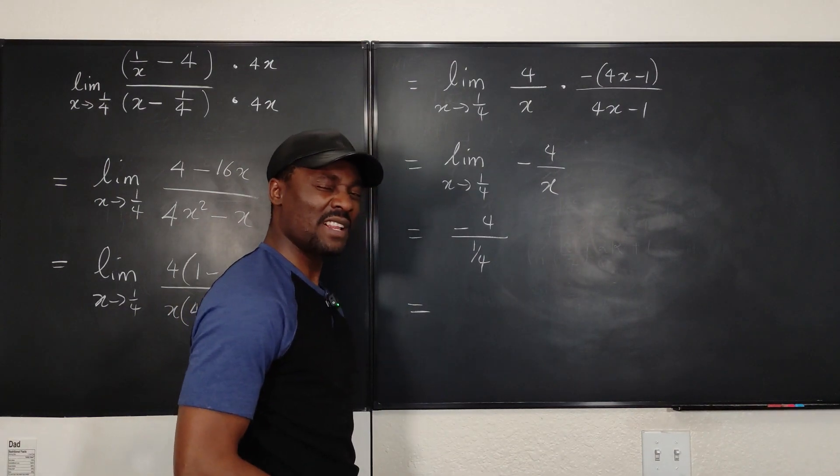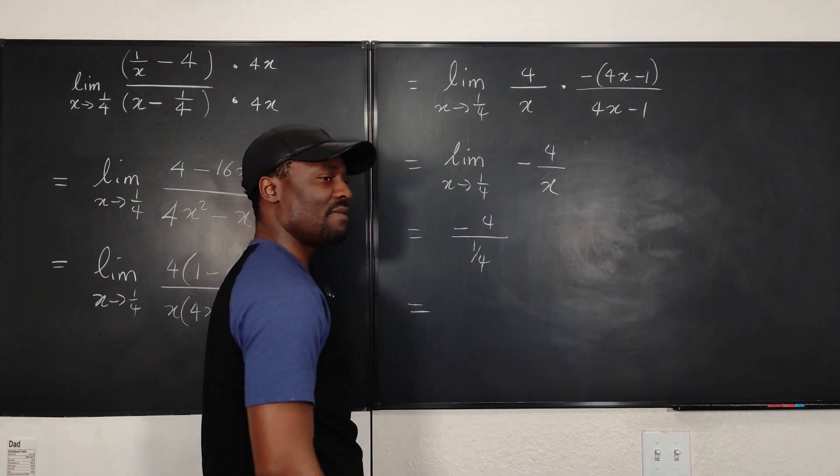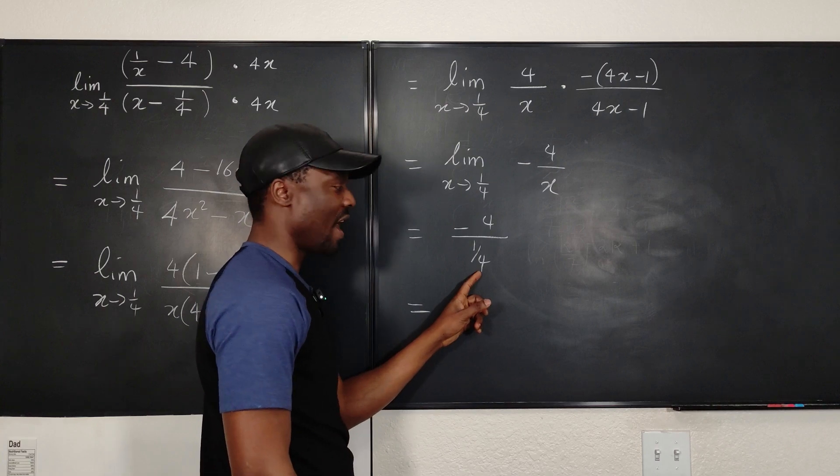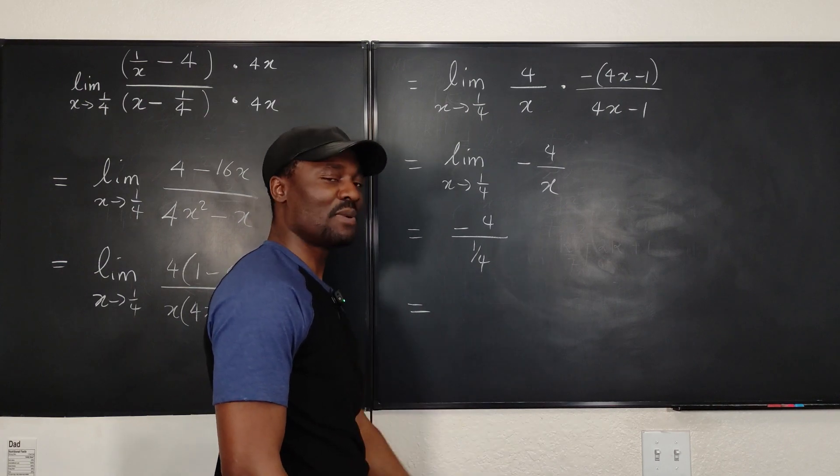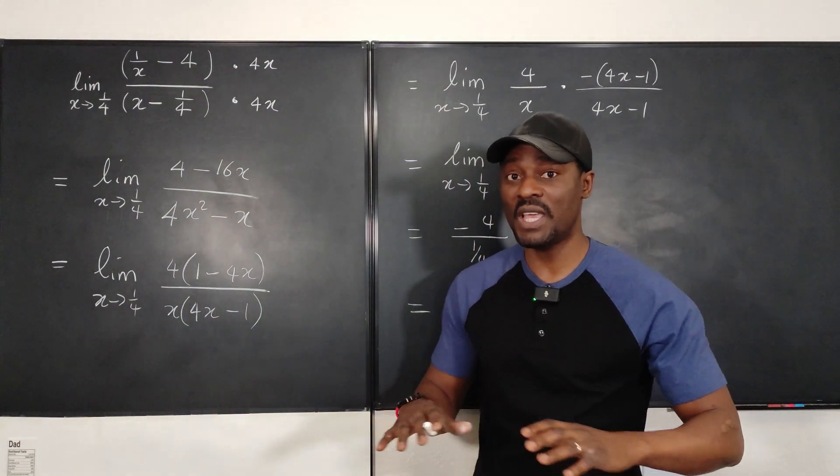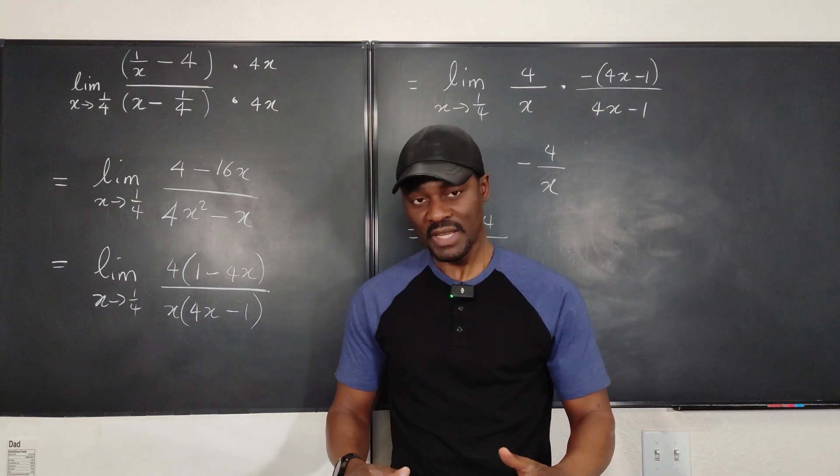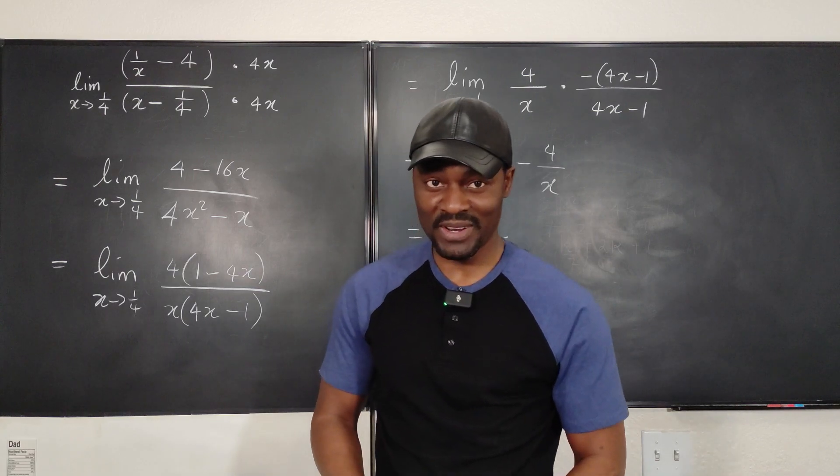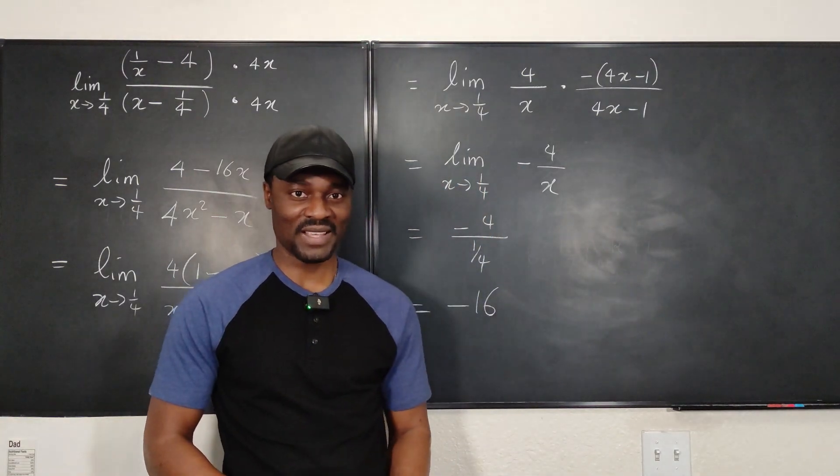And this is going to be negative 16. How do I know it's negative 16? Multiply the top and bottom by 4. Since that's the only denominator you have, multiply by 4, you get 1, multiply by 4, you get negative 16. And that is this limit without using L'Hôpital's Rule. Never stop learning because those who stop learning have stopped living. Bye-bye.